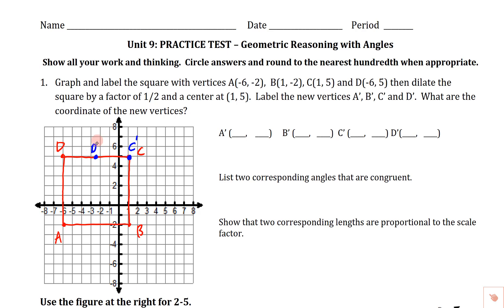We do the same thing with B vertically — the distance is also seven, so half is three-and-a-half. One, two, three-and-a-half puts us right here — so there's B prime. And A is going to be located half the horizontal distance and half the vertical distance from C, so this is A prime. We've got our new smaller square drawn.